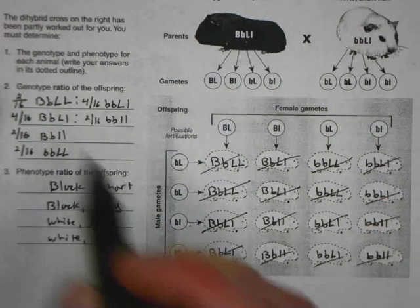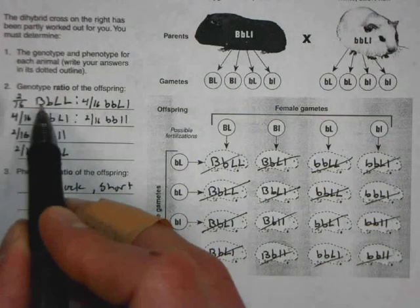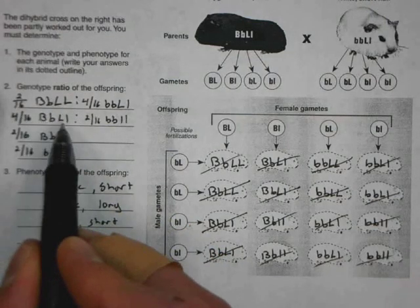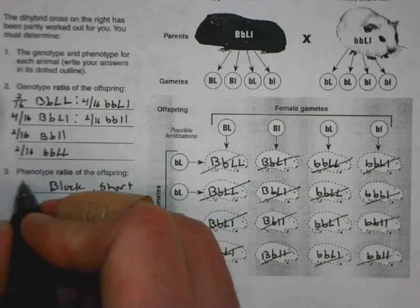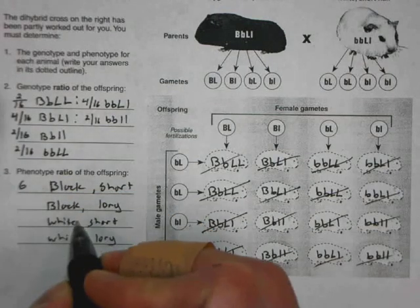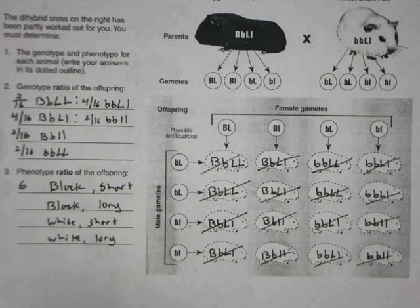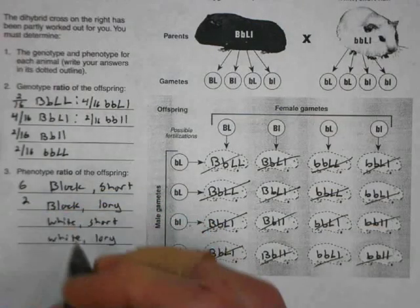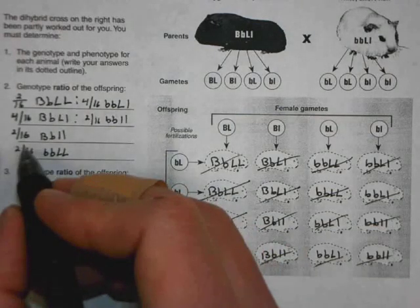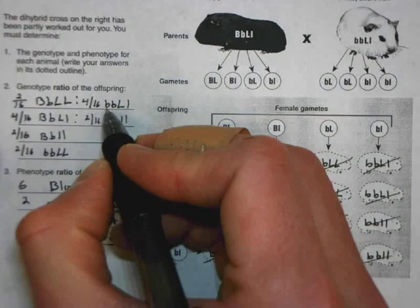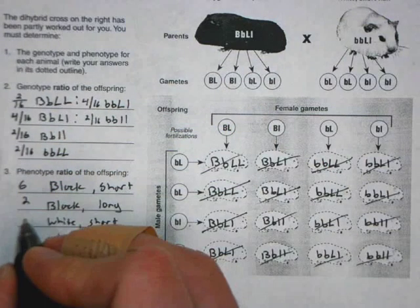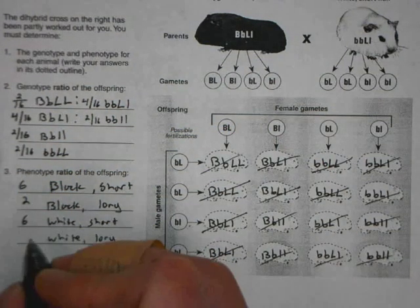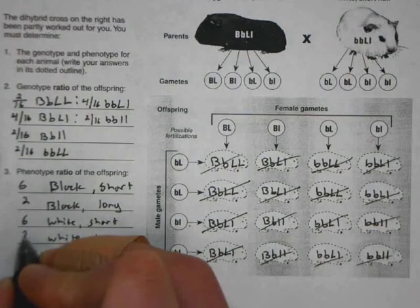So counting the phenotypes: I have two plus another four that are black with short hair — that's six. Black with long hair I have two. White with short hair I have two plus another four — so six total. And white with long hair I also have two.